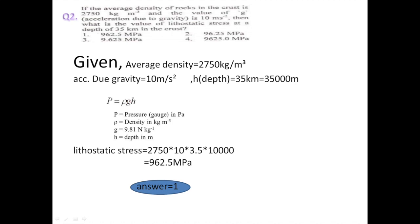The equation for lithostatic stress or hydrostatic pressure is the same: P = ρgH. Here P is pressure or stress, ρ is density, g is acceleration due to gravity, which is given as 10 meter per second square. The depth H is 35 kilometer. We convert this to meters since density is in meter cube and g is in meters, so 35 kilometer becomes 35,000 meters. Putting all values into the formula, the lithostatic pressure becomes 962.5 mega Pascal.